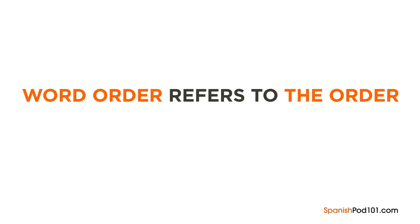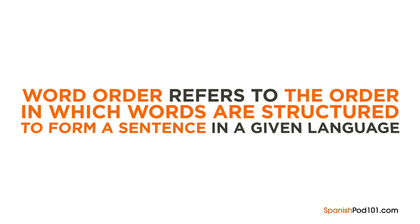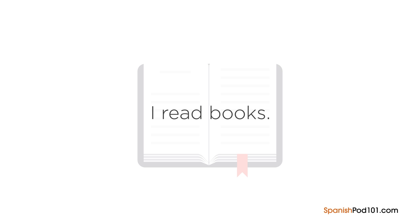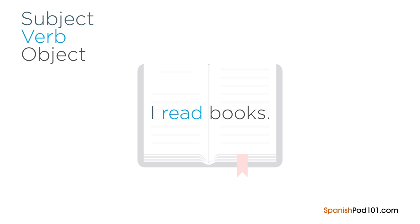Word order refers to the order in which words are structured to form a sentence in a given language. Consider the English sentence 'I read books.' The subject 'I' is presented first, followed by the verb 'read,' and then the object 'books' is positioned last. The basic word order for English is subject, verb, object — or SVO for short.